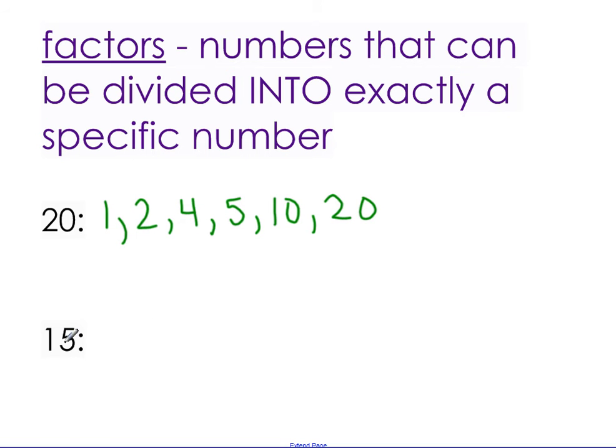All of the factors of 15 would be 1, 2 no, 3 yes, 4 no, 5 yes. I noticed that 3 and 5 go together, so 1 would go with 15. There are no other numbers between 1 and 15 that divide into 15 evenly. So all of the factors of 15 are 1, 3, 5, and 15.